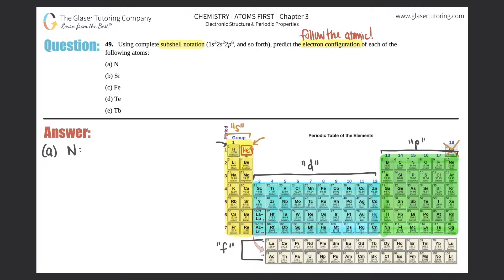Just know that the s's start with one, so this first group is 1s, 2s, 3s, and so forth. The p's start with two, so 2p, 3p, etc. The d's start with three, so the first blue row would be 3d, 4d, etc. And the f's start with four, so 4f and 5f.